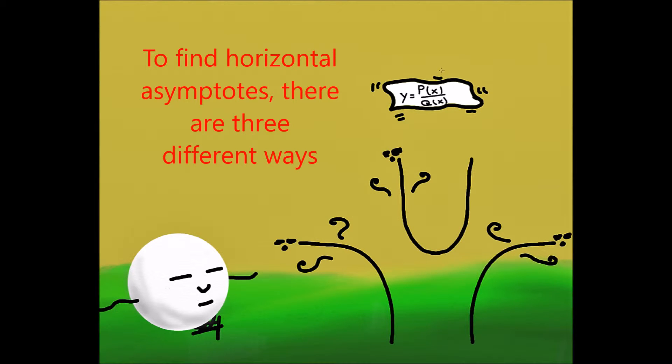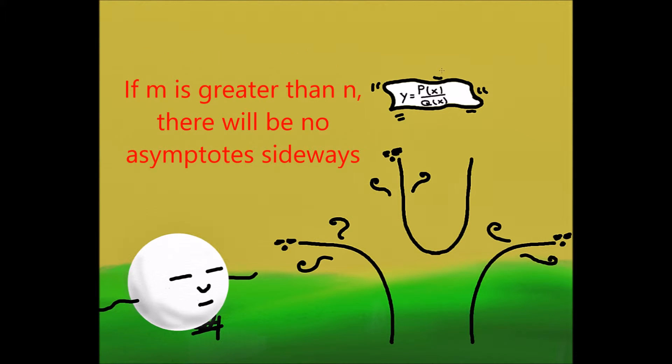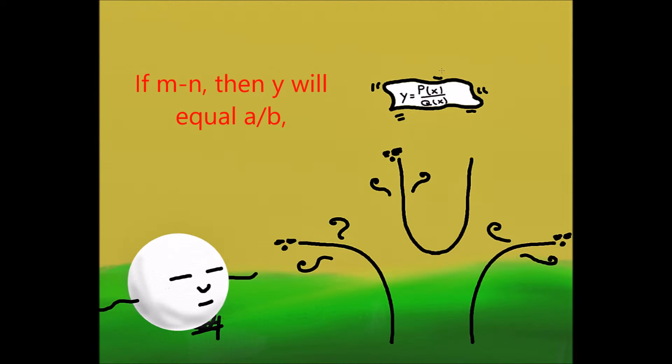To find horizontal asymptotes, there are three different ways. If m is greater than n, there will be no asymptotes sideways. If m equals n, then y will be equal to a over b, and a horizontal asymptote is what you will see.